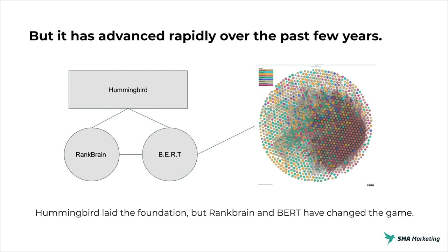This new approach has radically changed the way that search engines show results, specifically in rich features like featured snippets, the People Also Ask box, the knowledge panel, and things of that nature. Those can be influenced very much by a better understanding of the entities on your page from search engines using Semantic SEO.